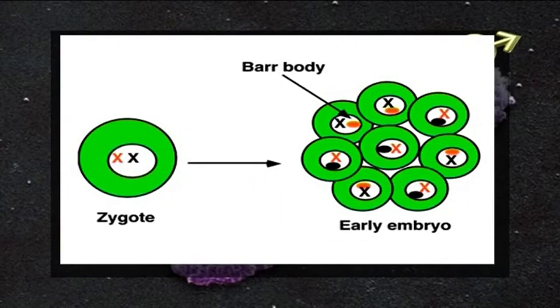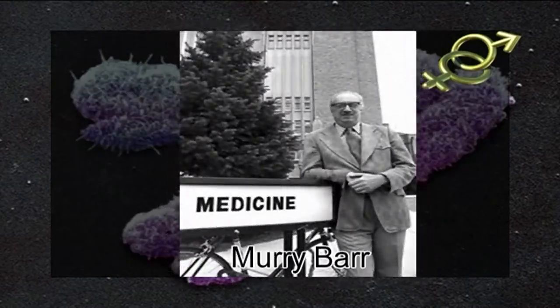Chromosomes are ordinarily visible under a microscope only when the cell is dividing. However, when non-dividing cells are treated with stains that bind to chromosomes, a darkly stained body is visible in the nuclei of cells from females but not in cells from normal males. This body is actually the condensed X chromosome and it is called a Barr body, after its discoverer Murray Barr.